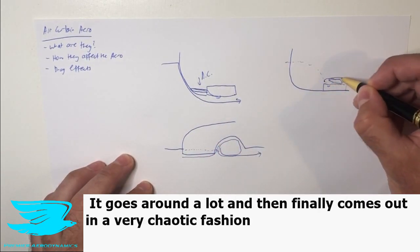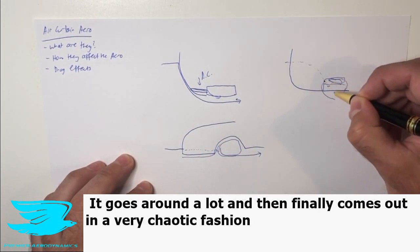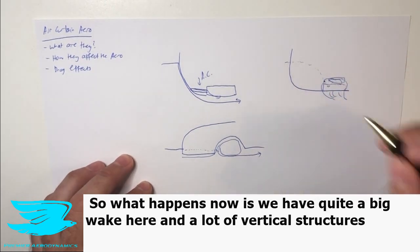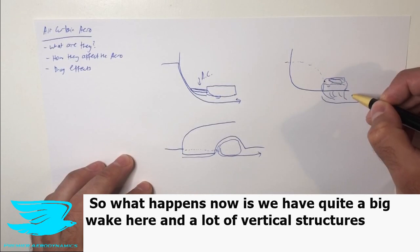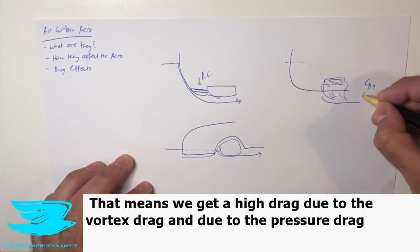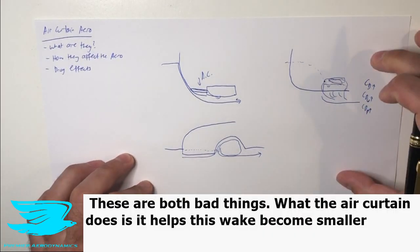It goes around a lot, wiggles around, and then finally comes out in a very chaotic fashion. So what happens now is we have quite a big wake here and a lot of vertical structures. That means we get a high drag due to the vortex drag and due to the pressure drag. These are both bad things.